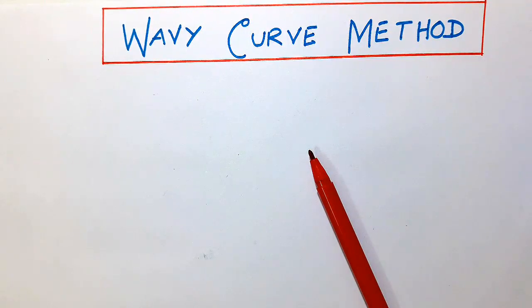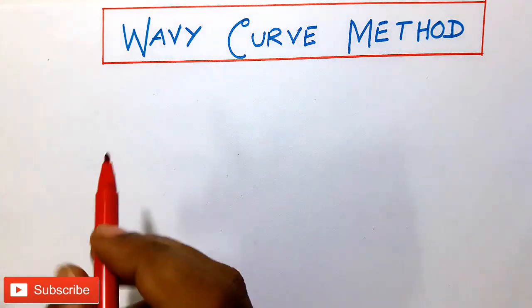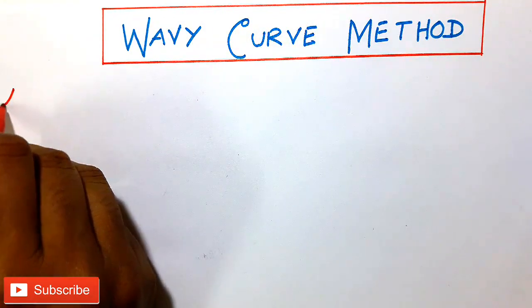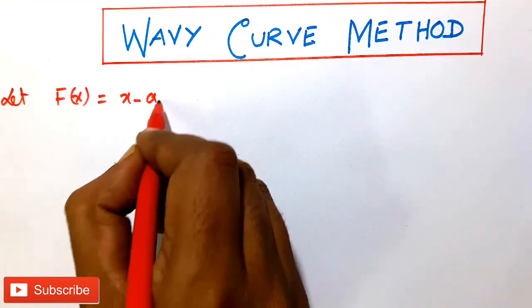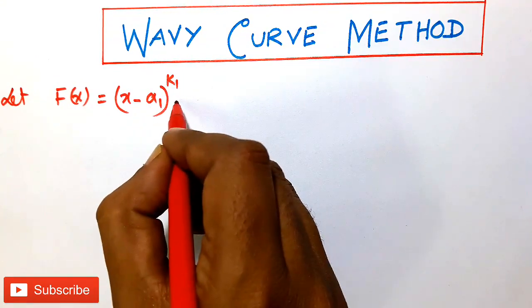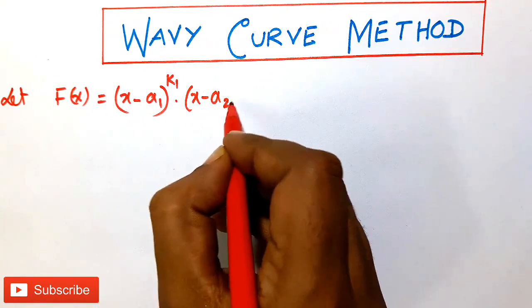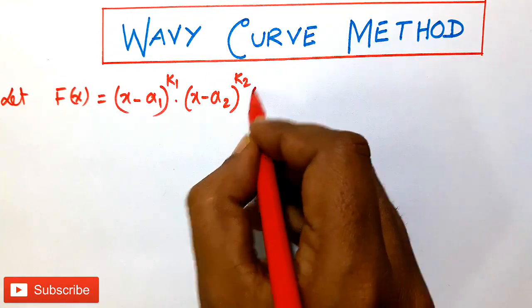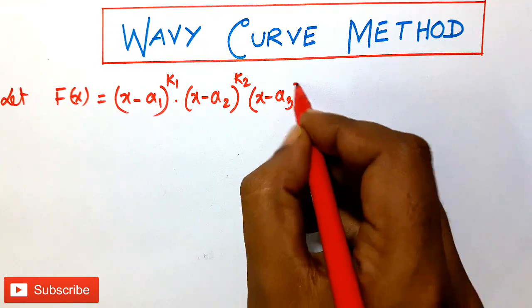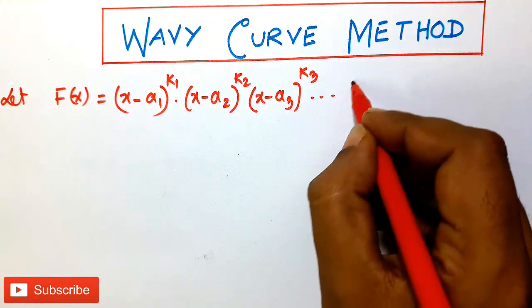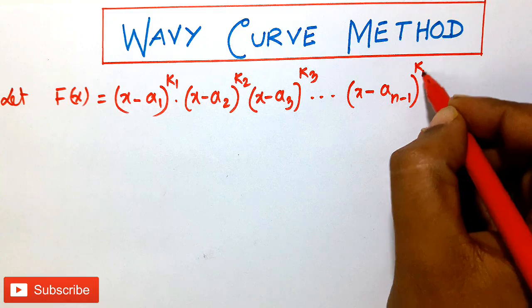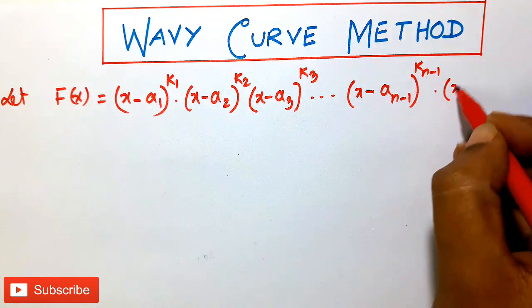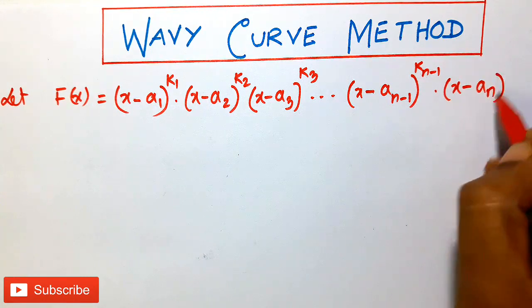Friends, it's an important topic: the OEB curve method. Consider the generalized method of intervals. Let f(x) equal to (x − a₁)^k₁ · (x − a₂)^k₂ · (x − a₃)^k₃ · ... · (x − aₙ₋₁)^(kₙ₋₁) · (x − aₙ)^kₙ.